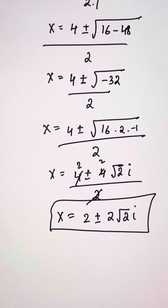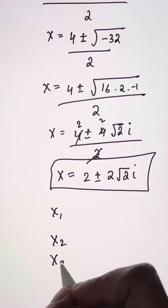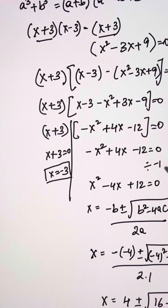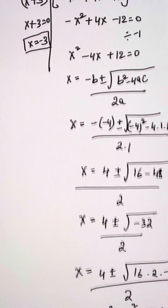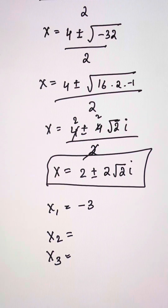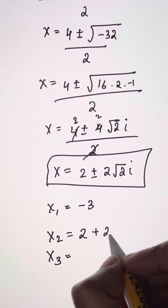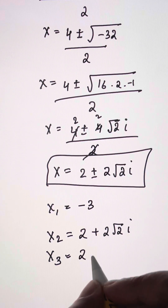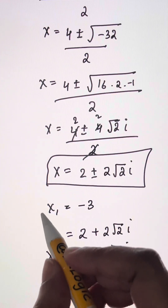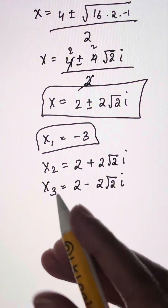So we have 3 values of x. x1 is negative 3 — that's the first value of x. x2 is 2 plus 2 root 2 i. x3 is 2 minus 2 root 2 i. x1 equals negative 3 is a real solution, and these two are complex solutions. Let's check if that is right.